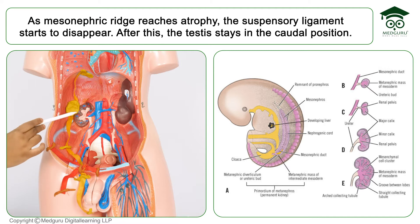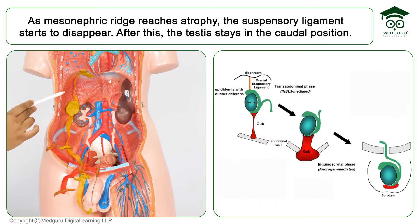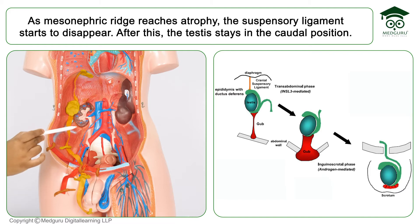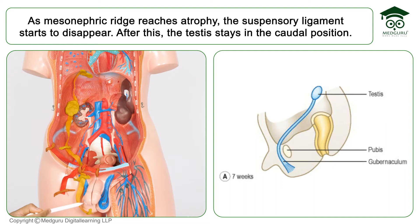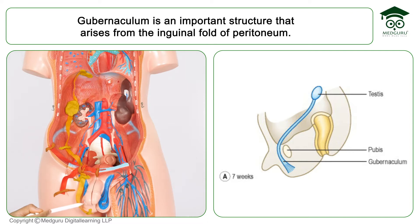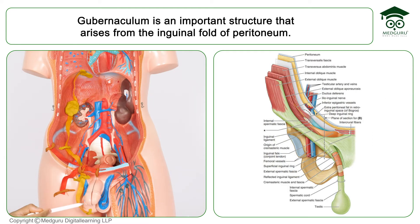As the mesonephric ridge is going to atrophy, the suspensory ligament is going to disappear and the testes lies in a caudal position. The lower end of the testes is connected to the bottom of the empty scrotum by a fibromuscular band known as gubernaculum. This gubernaculum is a very important structure, as you have seen in the inguinal canal videos, showing the path of the spermatic cord through the inguinal canal.